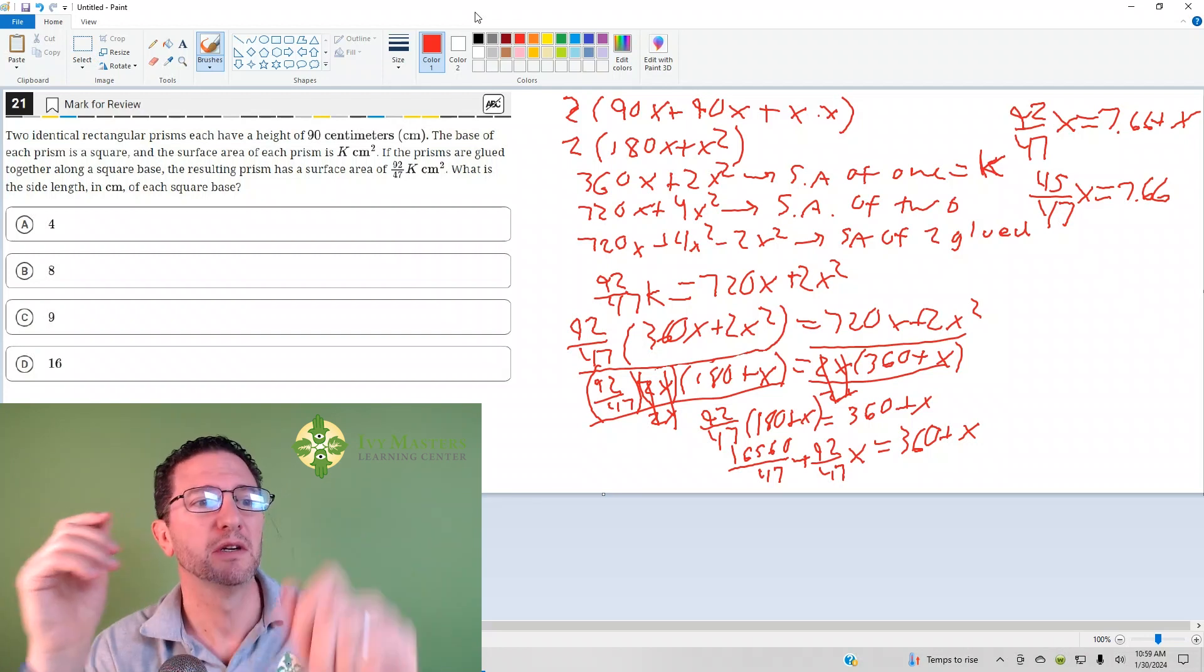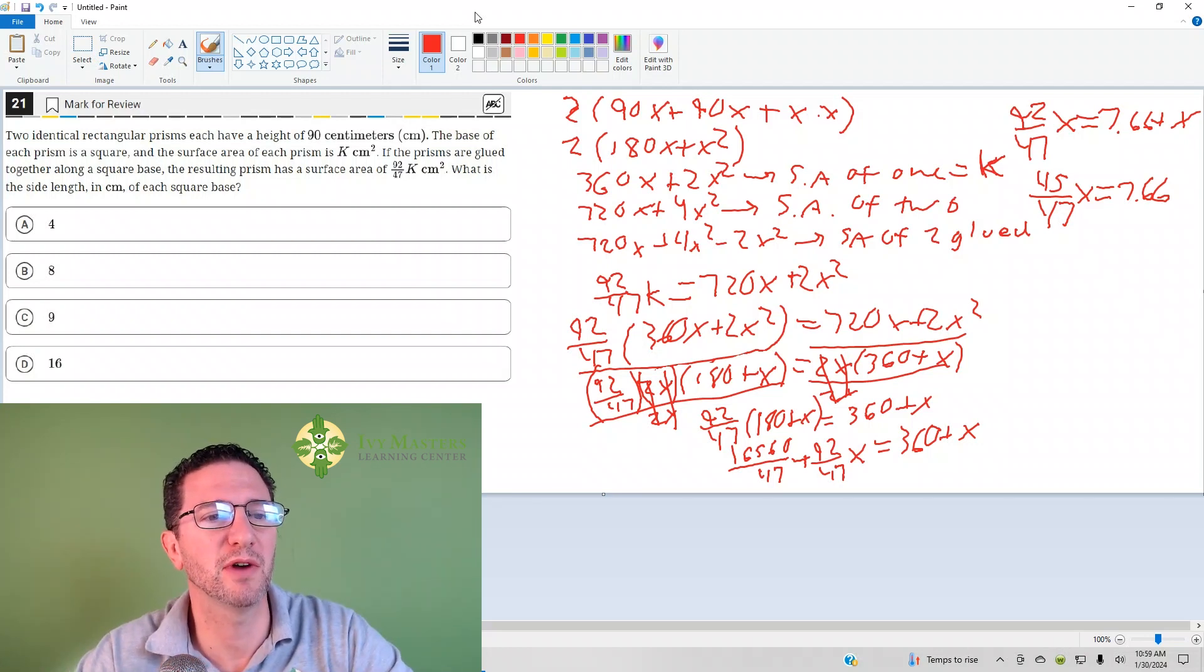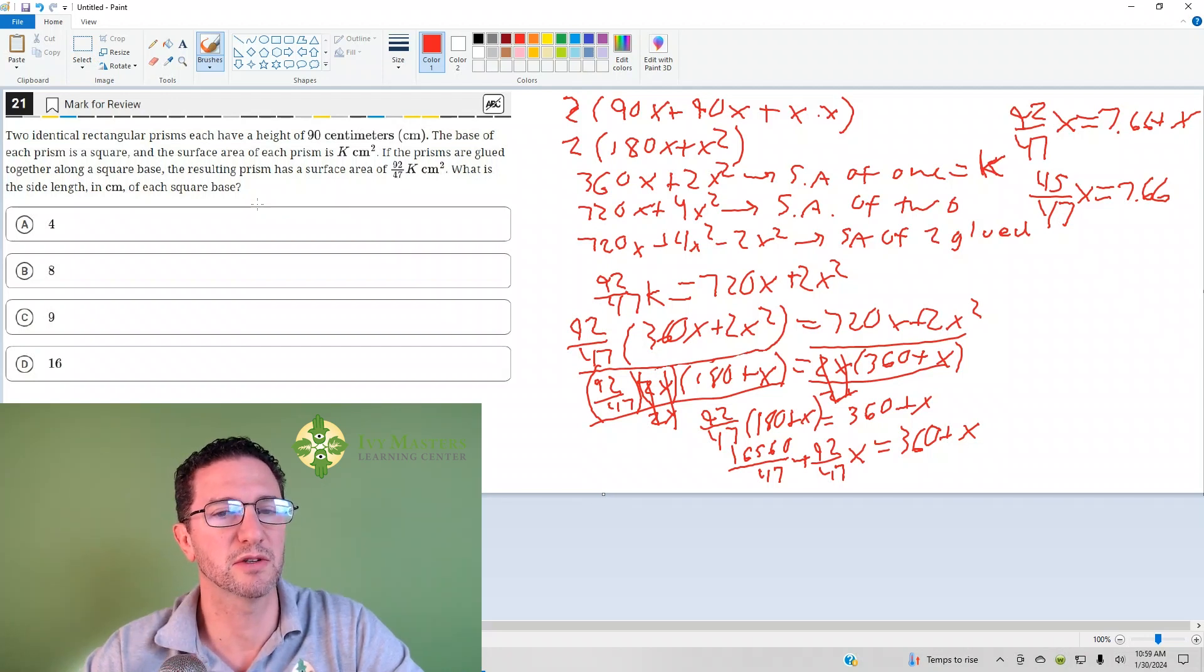Number 21 reads: two identical rectangular prisms have a height of 90 centimeters. The base of each prism is a square, and the surface area of each prism is k centimeters squared. If the prisms are glued together along the square base, the resulting prism has a surface area of 92 over 47 k centimeters squared. What is the side length in centimeters of the square base?